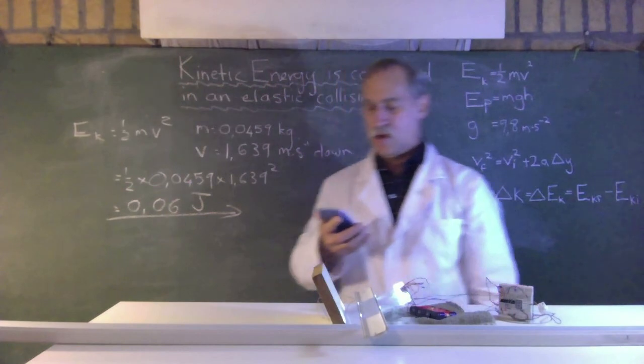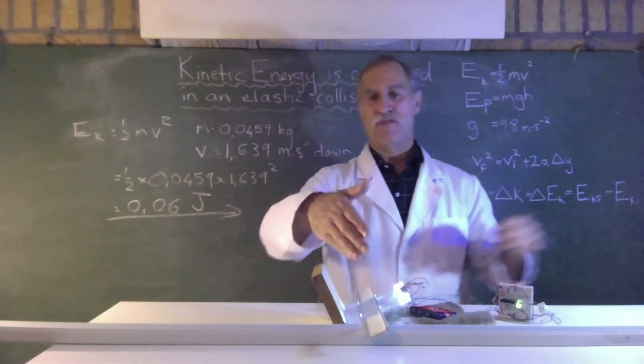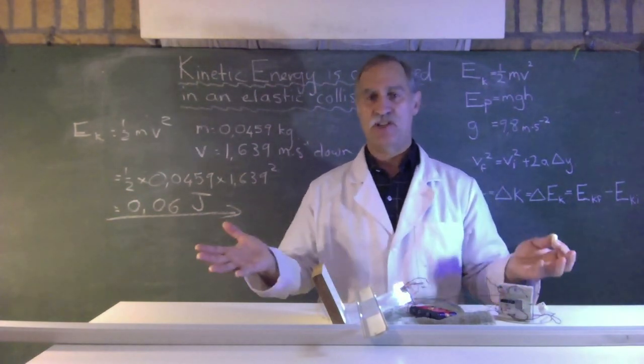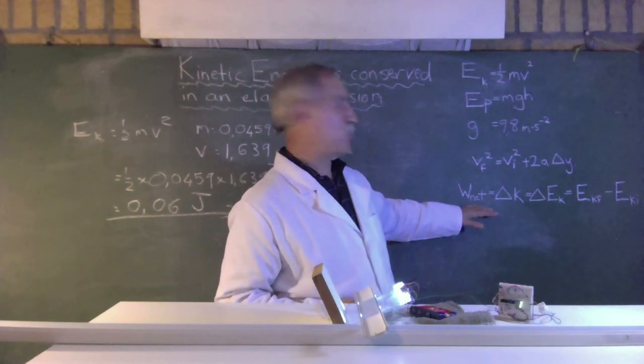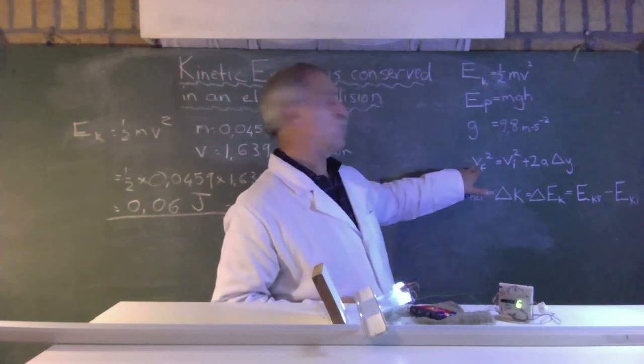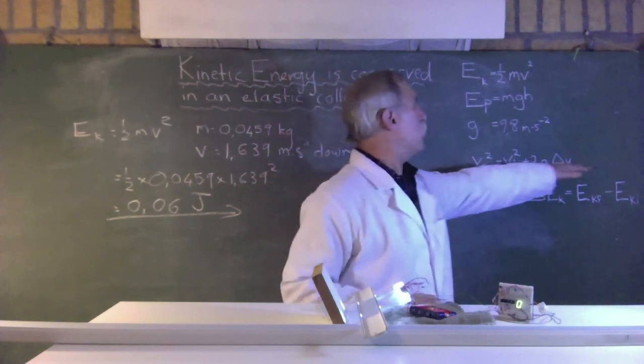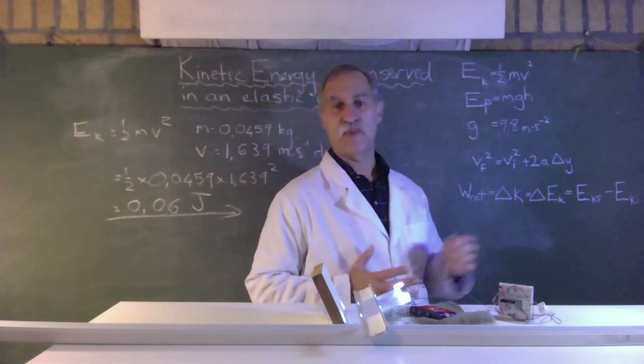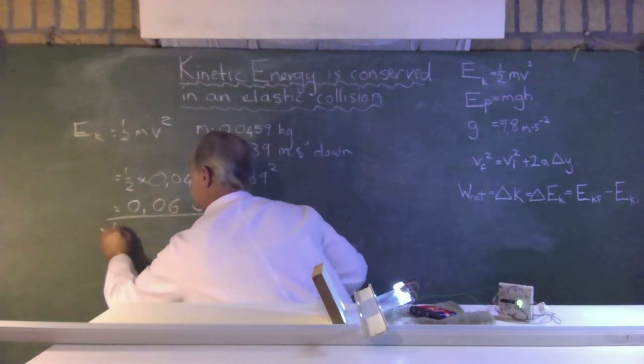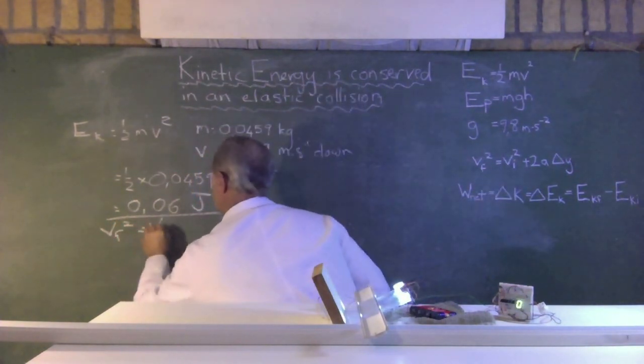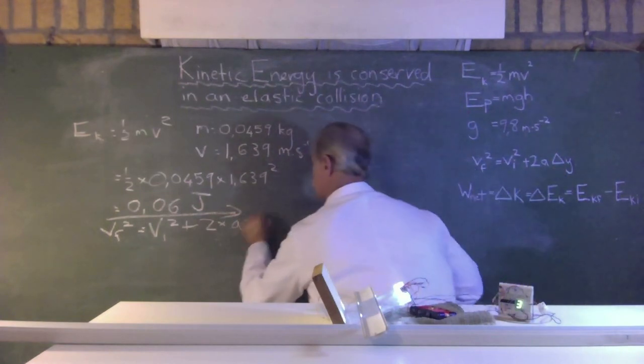It is a scalar quantity, so it does not need a direction. Let's use an equation of motion to see if our light meter or our velocity meter is correct. Let's use this equation of motion. Now, most people are familiar with the equations of motion. V final, which is what we measured, is 1.639. Let's see if, by plugging in those values, we get the same measurement of velocity. So, let's use our equation of motion here, which is V final squared equals V initial squared plus 2 times a times delta y.